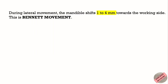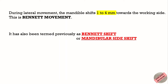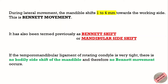During lateral movement, the mandible shifts 1 to 4 mm towards the working side. This is Bennett Movement. It has also been termed previously as Bennett Shift or Mandibular Side Shift. If the temporomandibular ligament of the rotating condyle is very tight, there is no bodily side shift of the mandible and therefore no Bennett Movement occurs.